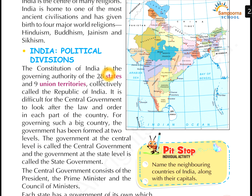The constitution of India is the governing authority of the 28 states and 9 union territories, collectively called the Republic of India. We have 28 states and 9 union territories.